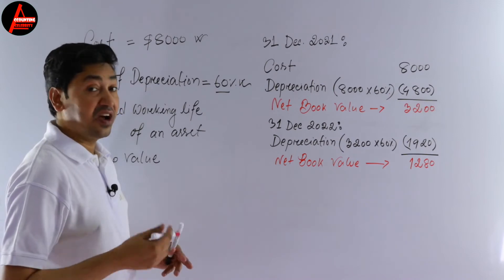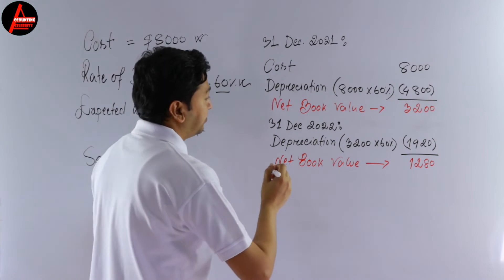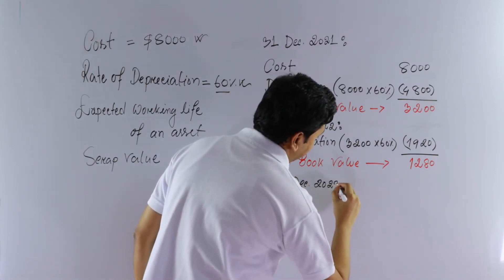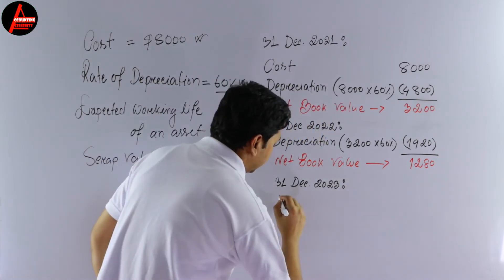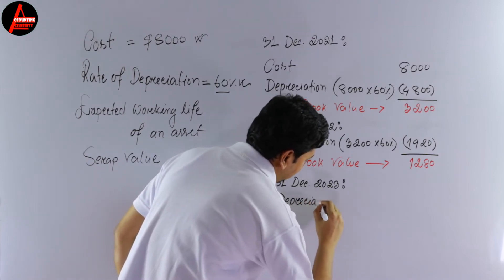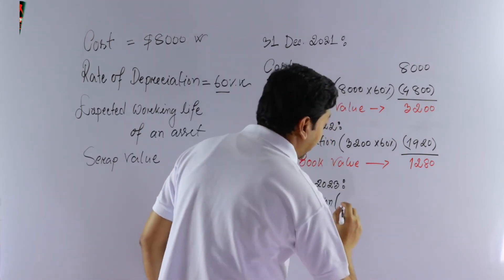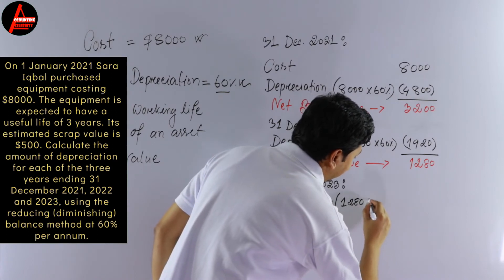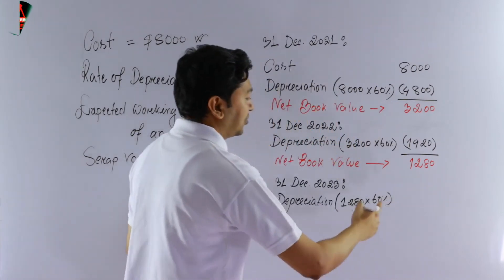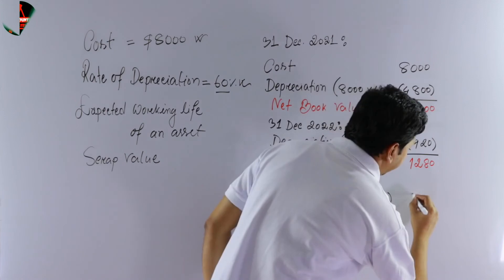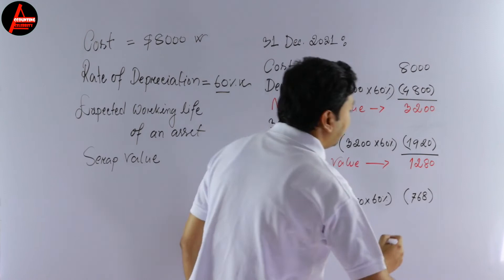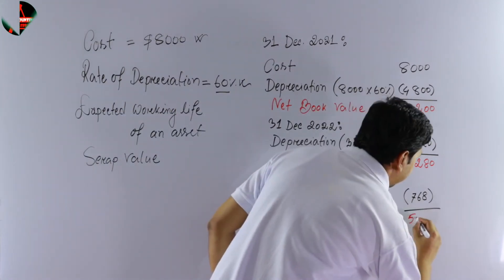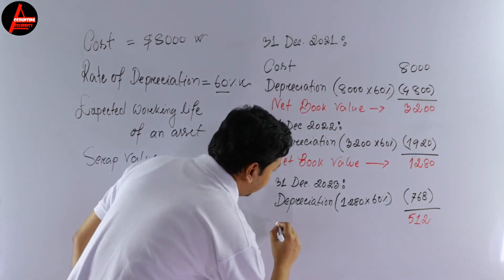Now for the third year, 31st December 2023. We calculate depreciation on the net book value of 2022, which is $1,280. So $1,280 multiplied by 60% equals $768. That is the depreciation for 2023. Subtracting $768 from $1,280 gives us a net book value of $512 at 31st December 2023.